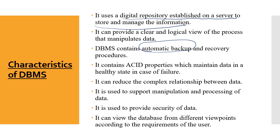For example, if you accidentally delete a file, the data management system allows you to perform recovery — you delete from one place and it goes to the recycle bin so you can use it again. So you can use the automatic backup or file retrieval options. Next, it contains ACID properties which maintain data in a healthy state in case of failure. It can reduce complex relationships with data. It provides synchronized data. It supports manipulation and processing of data, provides data security, and can view the database from different viewpoints.